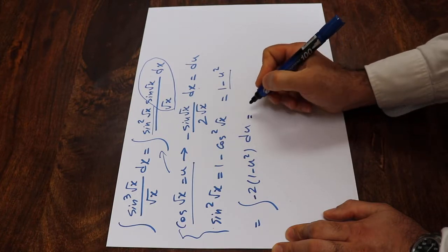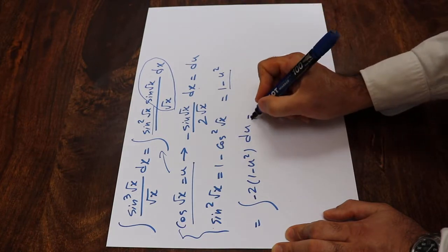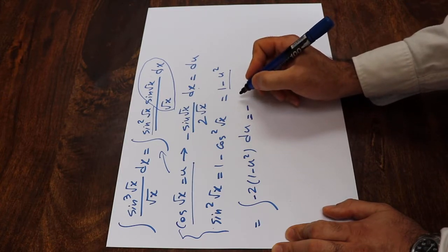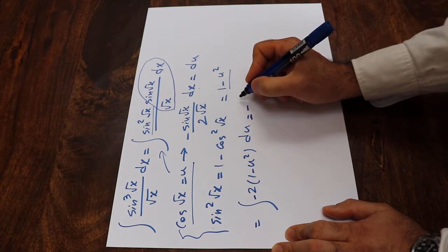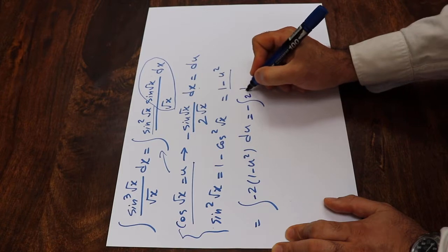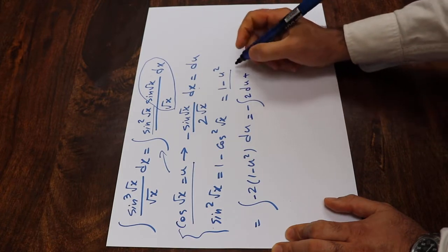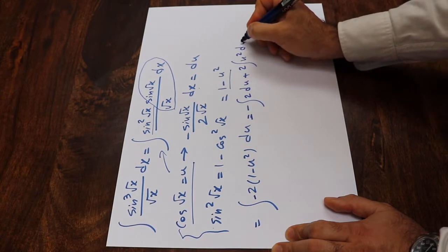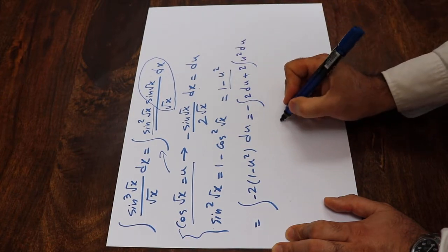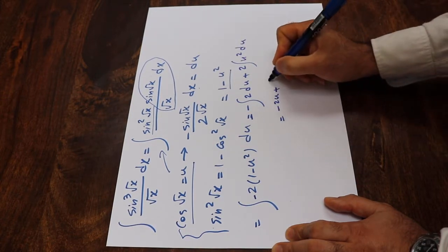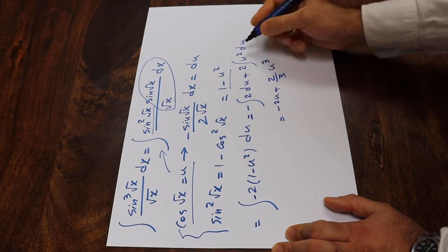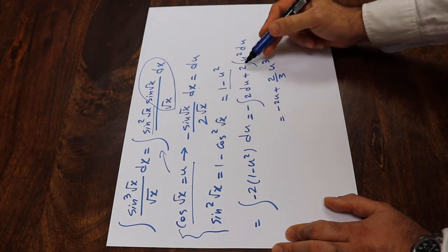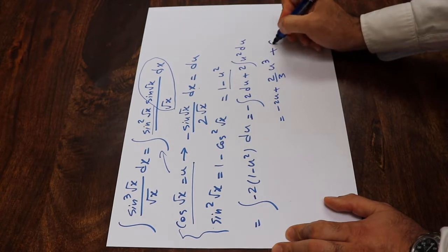This integral is relatively straightforward to calculate. It will be equal to minus 2 integral of du plus 2 integral of u squared du, which equals minus 2u plus two-thirds u cubed. The integral of u squared is u cubed divided by 3, times 2 gives two-thirds, plus C, which is the constant of integration.